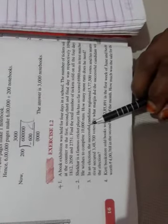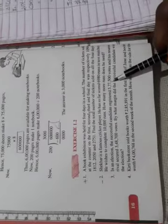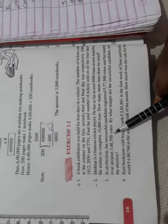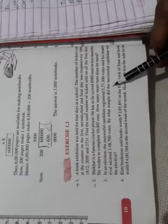Next, number 3. In an election, the successful candidate registered 5,77,500 votes and his nearest rival secured 3,48,700 votes. By what margin did the successful candidate win the election?